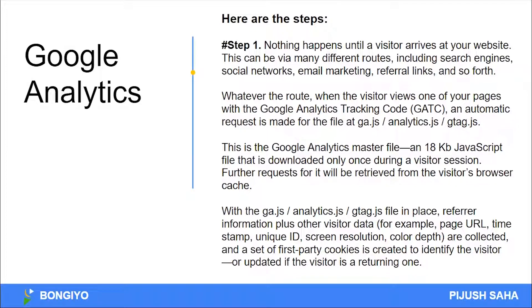For example, page URL, timestamp, unique ID, and screen resolution, color depth are collected. Which page has been visited, the timestamp, and a unique ID are captured. Screen resolution and color depth are collected. A set of first-party cookies is created to identify the visitor and updated if the visitor is a returning one. You can see whether the user is returning or a new visitor, and whether it is the same session or a multi-session.